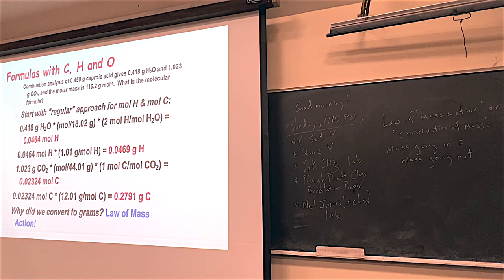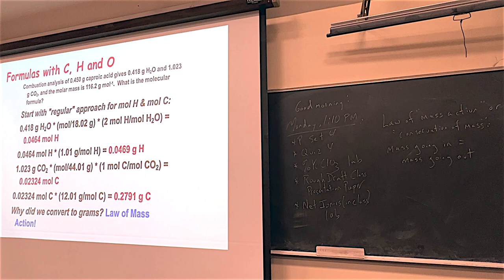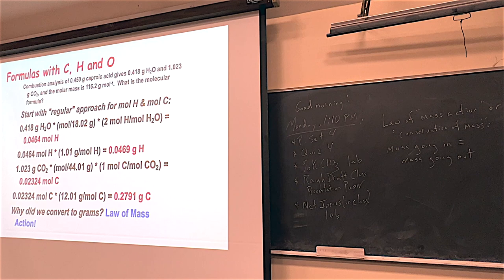The extension we do here is: once you have moles of hydrogen, you need to turn it into grams of hydrogen. The moles of hydrogen times the molar mass of hydrogen — 1.01 grams per mole — gives 0.0469 grams of hydrogen. That's all the hydrogen in this reaction. The same thing for carbon: we took the moles of carbon, turned it into grams of carbon — 0.2791 grams of carbon. The reason we're doing this is because if you know how much sample you started with — in this problem, 0.450 grams — that represents all of the carbon, hydrogen, and oxygen in the whole sample.